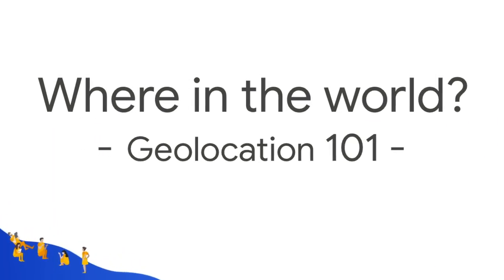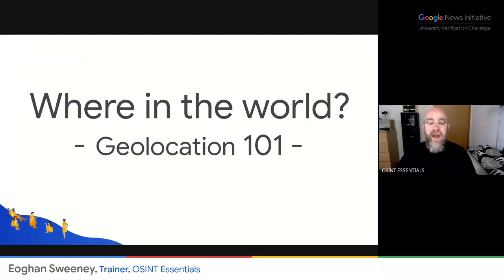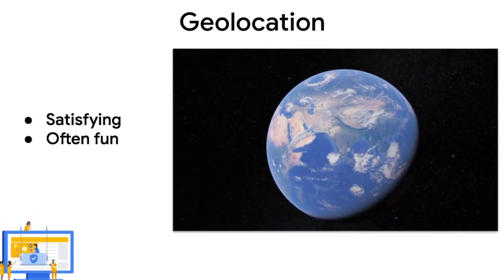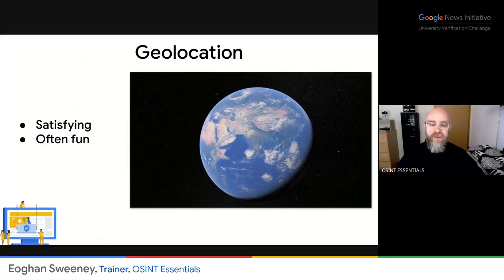Geolocation, in its essence, is basically just looking at a photo or a video, a piece of content, then going to a mapping application, finding similar objects, and being able to say yes, this is where it claims to be, or no, it's not. It's one of my favorite things in the whole verification process because it can be very satisfying. You can get 100% visual confirmation of the information you need. And it's often quite fun.